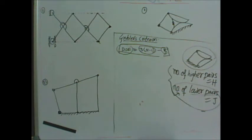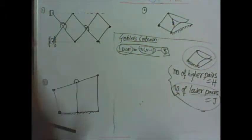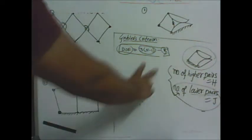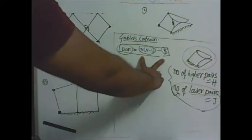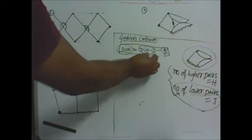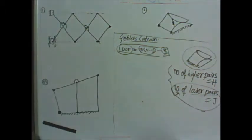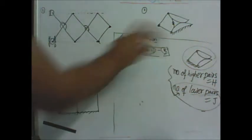Yesterday in our discussions we came across finding the degree of freedom for kinematic mechanisms using Grübler's criterion. The degree of freedom for a given mechanism is given by the formula where 3 into (n-1) is related to the number of mobile links, and r is the degree of constraints or number of constraints for the total mechanism.